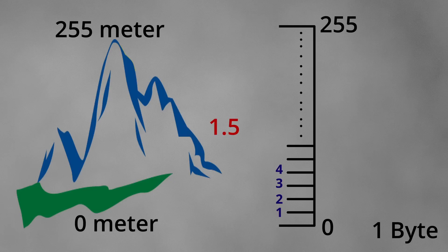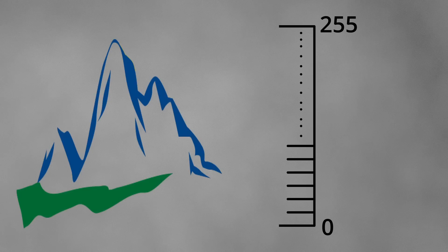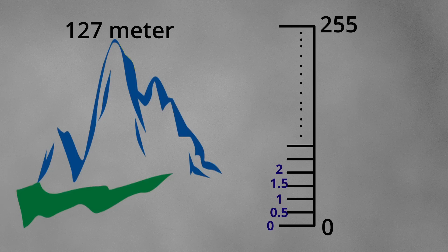Now imagine we have another terrain where the highest point is 127 meters. If I store the height map pixel in a one-byte integer, this time my height map values can be 0, 0.5, 1, 1.5, up to 254. As you can see, as the difference between the minimum and maximum height gets smaller, I can express my terrain with higher accuracy using the same data type. In the first case I could express each pixel with one meter accuracy; in the second case, half-meter accuracy. This is the first rule and the base of everything, but it is not enough on its own.